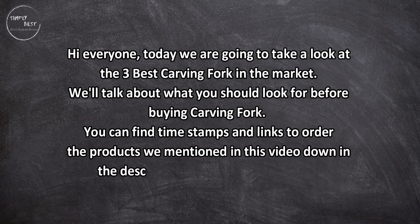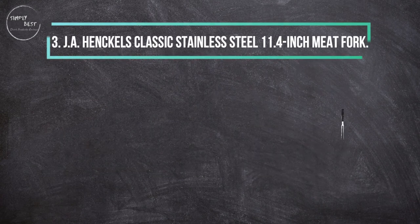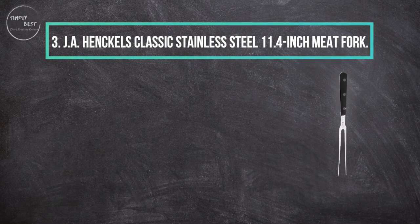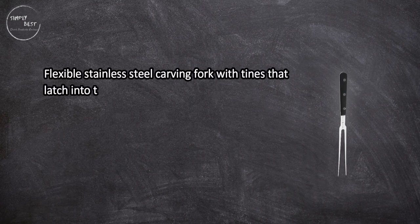the products we mentioned in this video down in the description below. Let's get started. At number three: J.A. Henckels Classic Stainless Steel 11.4 inch Meat Fork. Flexible stainless steel carving fork with tines that latch into the meat